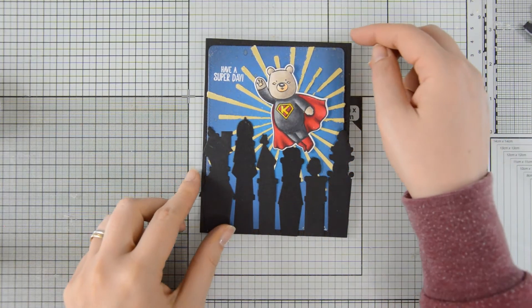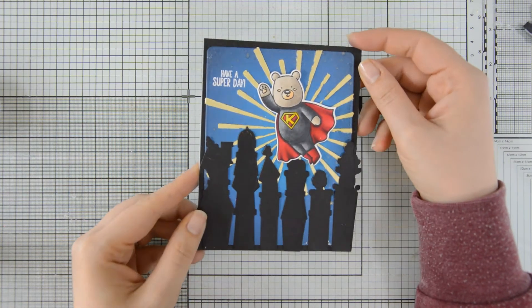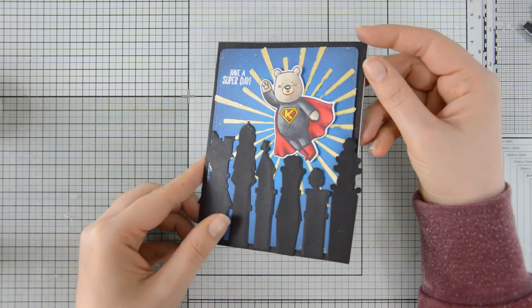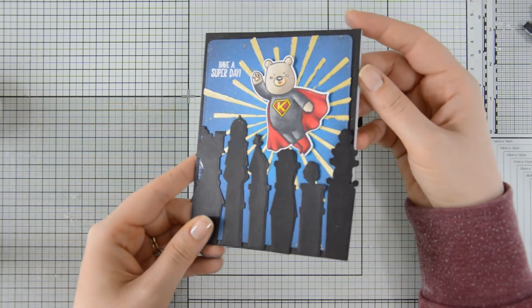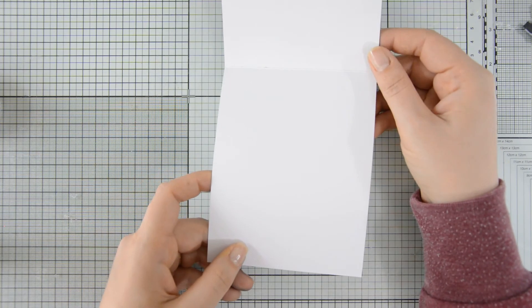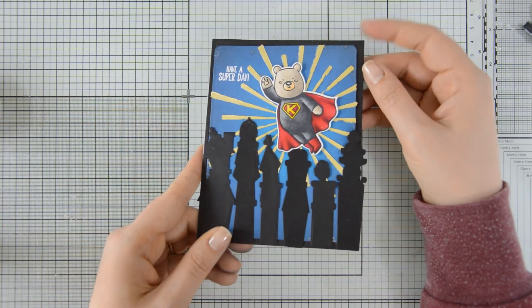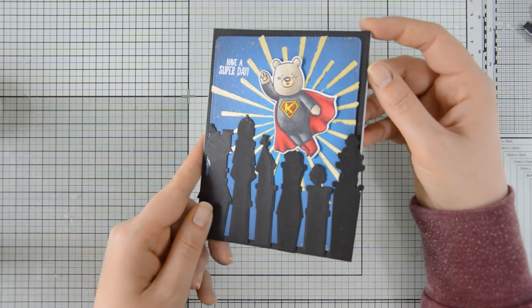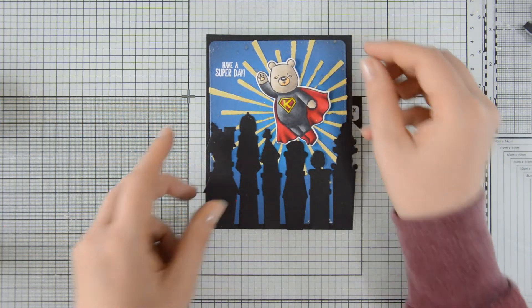I mounted everything on a top folding A2 card base. And this is the final result. I really love the way Cobby pops out of this card thanks to the contrast between the red cape and the blue background, and thanks to the stenciled focal point too.